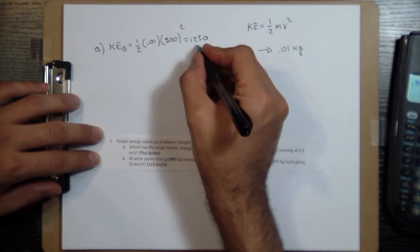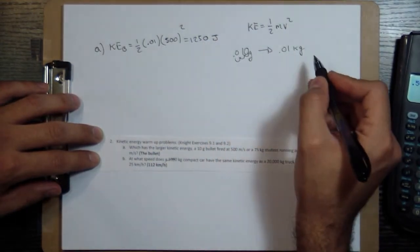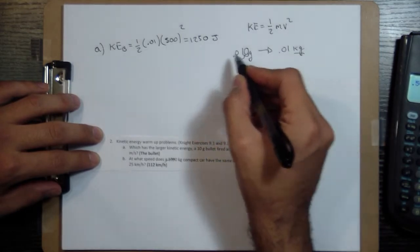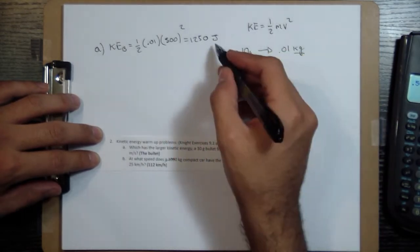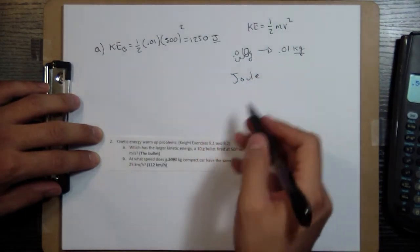And then, so this is going to be in joules because all our units are in SI units. So the units for energy in SI units is joules. Spelled like this, joule. After some guy named Joule.